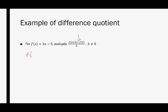I'm going to first look at f of x plus h. This just means anywhere in this function that I see an x, I'm replacing it with x plus h. So this would become 3 times x plus h minus 5, and now we're going to clean this up — that becomes 3x plus 3h minus 5.